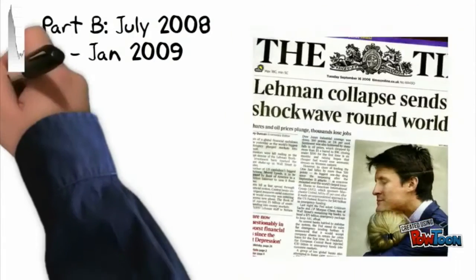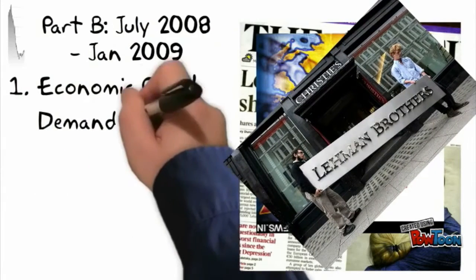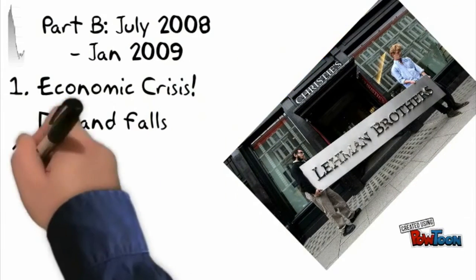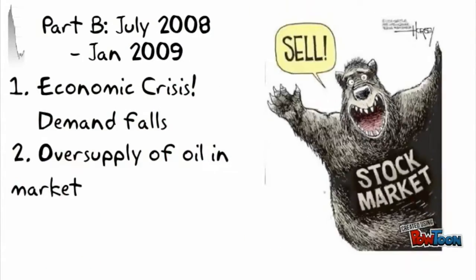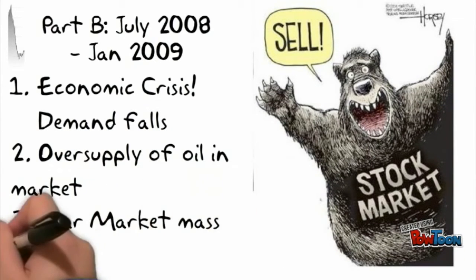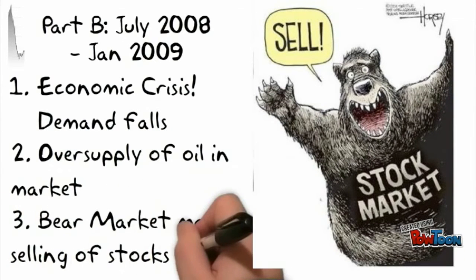Part B: The collapse of Lehman Brothers and the ensuing world economic crisis meant that demand for oil fell, because business and economic activity stagnated, and hence stockpiled oil became superfluous for global demand. Those speculators who had stockpiled oil while the price had been rising started to sell like crazy, which once again resulted in a vicious bear market, by which the dropping price encouraged more selling, and the price dropped even more.